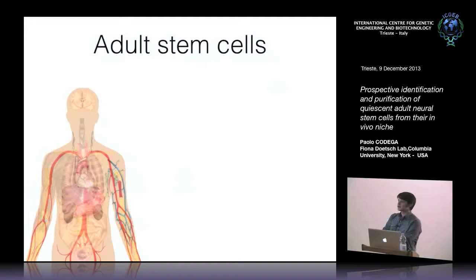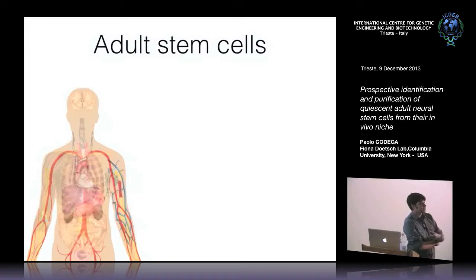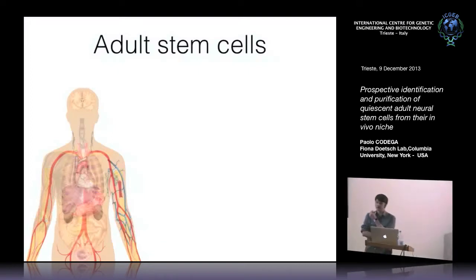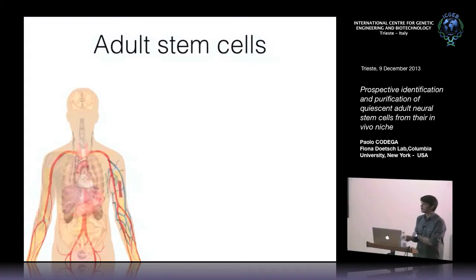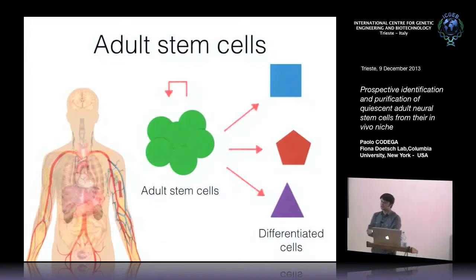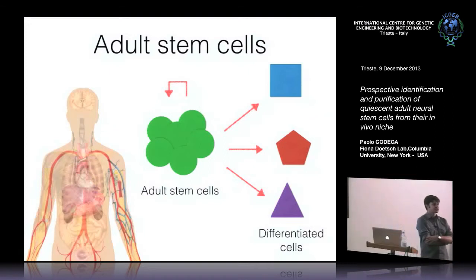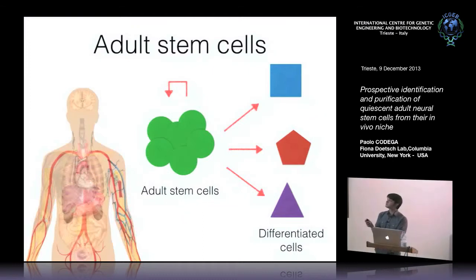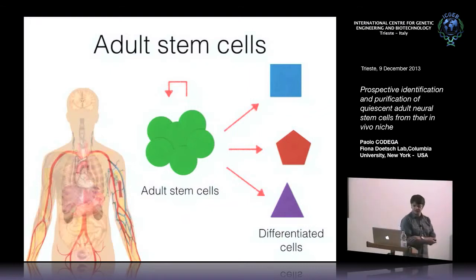In the adult body, some tissues continuously regenerate themselves, like blood or skin, and some other tissues like liver regenerate only after injury. These properties are achieved by adult stem cells that are partially undifferentiated cells resident in the tissue, with the capability to self-renew and to differentiate into cells of that tissue.